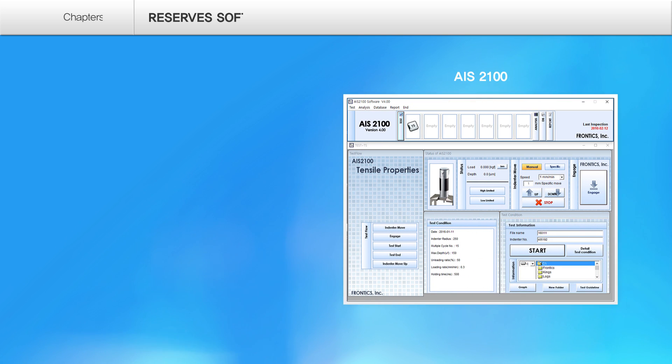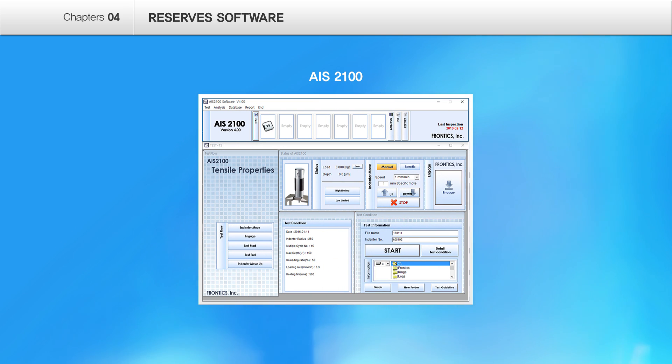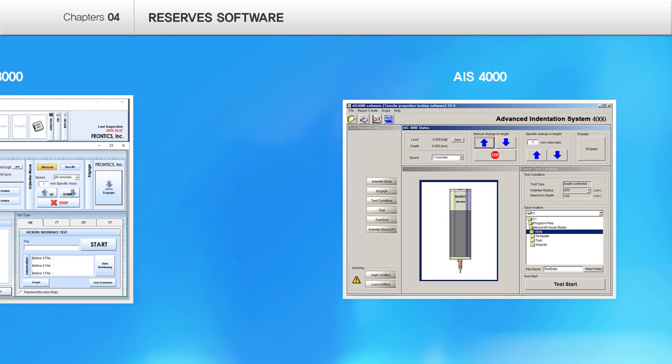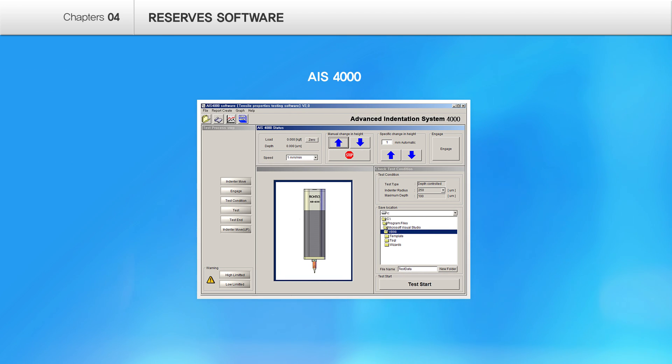In addition to the residual stress in basic software of AIS 3000 Compact, programs that calculate out the yield strength, tensile strength, hardness, fracture toughness are available, and it is being utilized in many different fields.